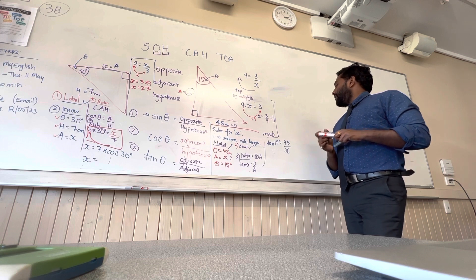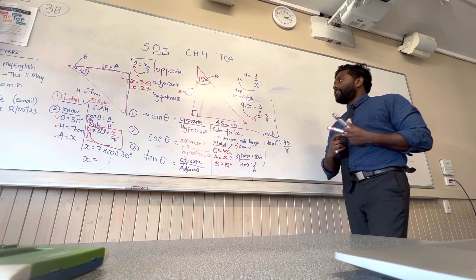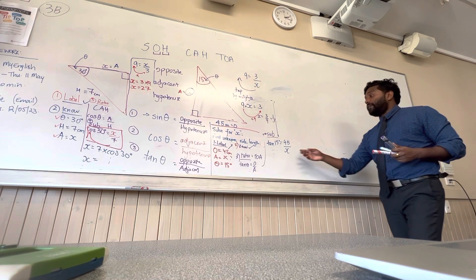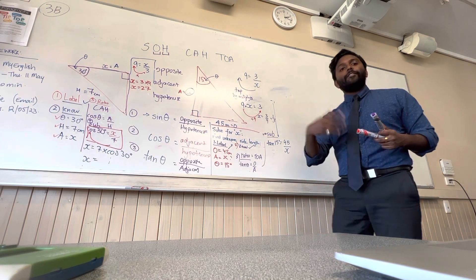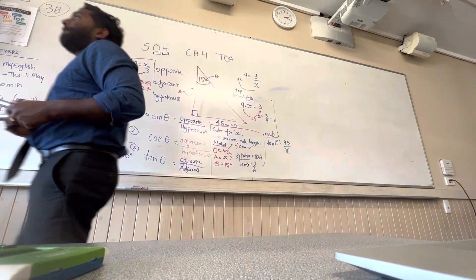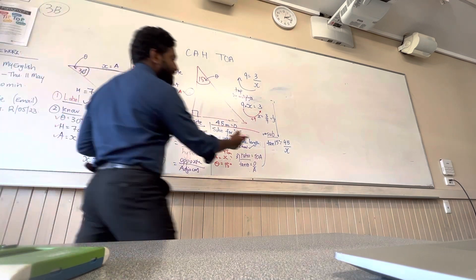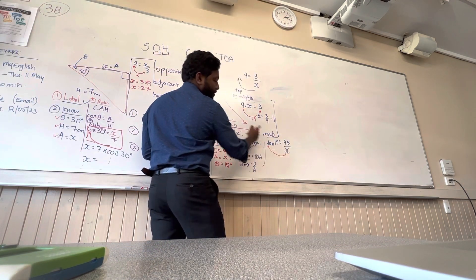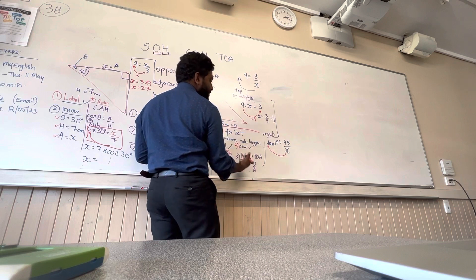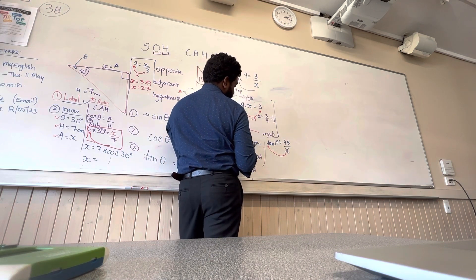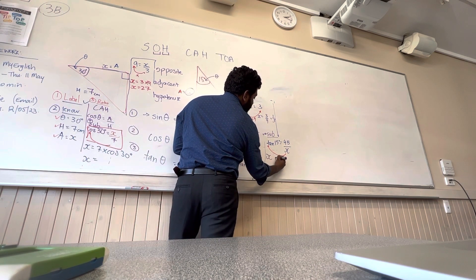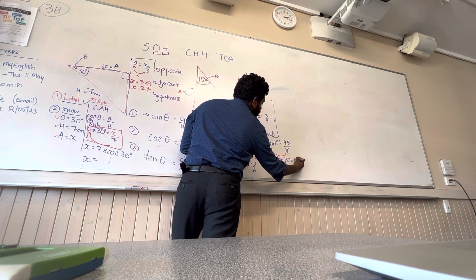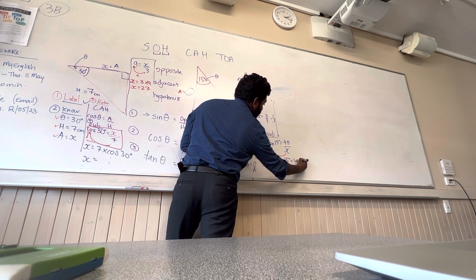Let's go back to this question. How do you solve for x? What do you need to do? I have to bring it to the top — yes. And why do you bring it to the top? Because it's the opposite, and it's at the bottom. We want to have it at the top. So you're going to have x times tan 15 degrees is equal to 45.